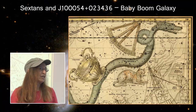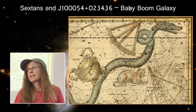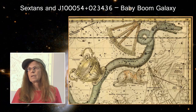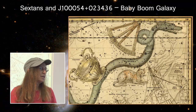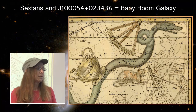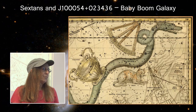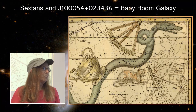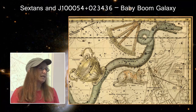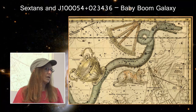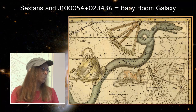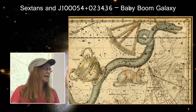Sextans is another constellation — a faint, not very prominent southern hemisphere constellation. However, it contains a galaxy with the exciting name of J100054+0234.336. It's referred to as a baby boom galaxy, but don't search for that term because a lot of galaxies are called that. It really does pertain to this one though.